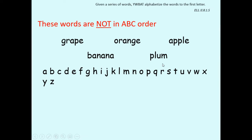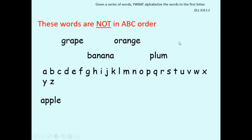As we're looking at these words, what word do you think goes first? Let's read them out before we start: grape, banana, orange, plum, apple. Now, what letter is at the beginning of the alphabet? An A. Do you see an A? Yes — the word 'apple' starts with A, so that goes first.